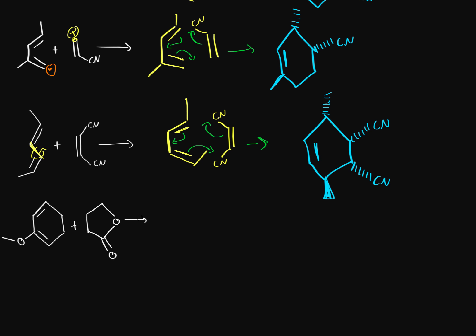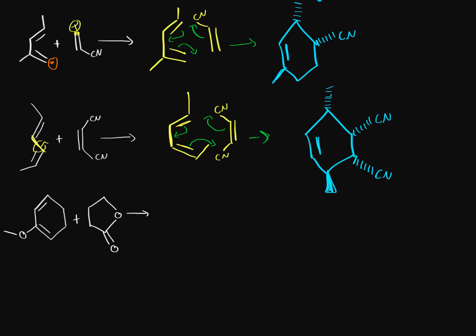The last example gives a pretty interesting product. We know that a particular carbon here is the most reactive — based on the resonance contribution, the pi bonds move over here and this bond goes over here, leaving this carbon with a positive charge, making it the most reactive on the dienophile. For the diene, a bond goes over here and a pi bond goes over here, giving us a negative charge on this carbon. So these two carbons are the most reactive and they will bond together.